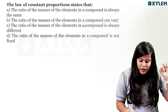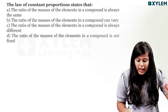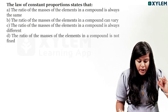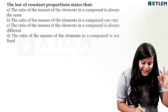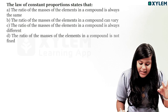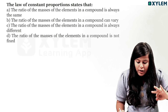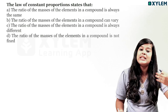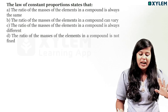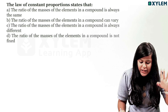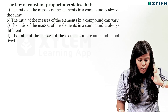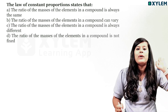The other options are: the ratio of the mass of elements in a compound can vary; or the ratio of the masses of elements in a compound is always different; or the ratio of the mass of elements in a compound is not fixed.